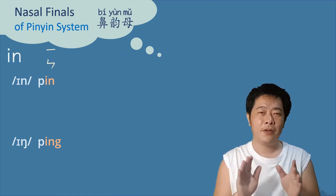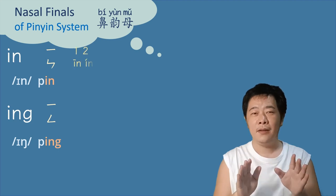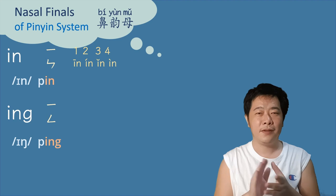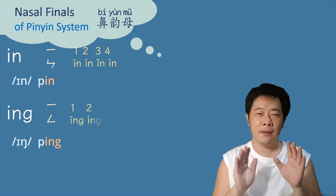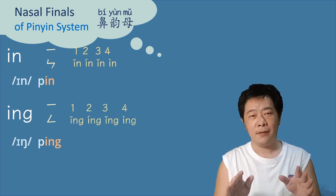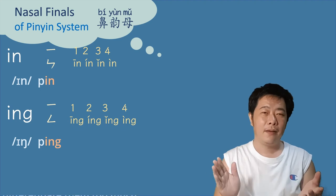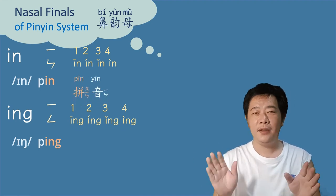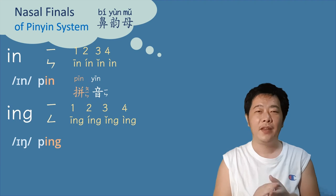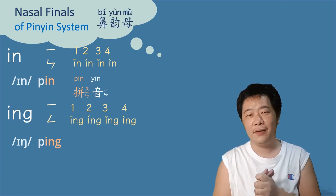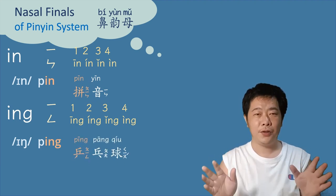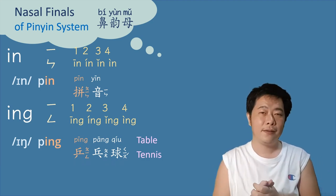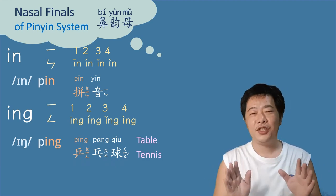Yīn's tones: yīn, yín, yǐn, yìn. Yīng's tones: yīng, yíng, yǐng, yìng. Example: 乒乓球 (pīngpāngqiú) — the most popular ball game in China.